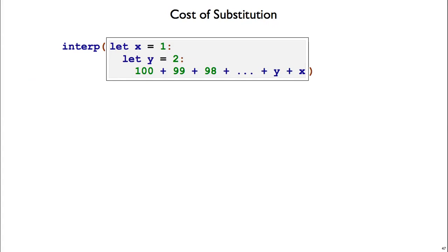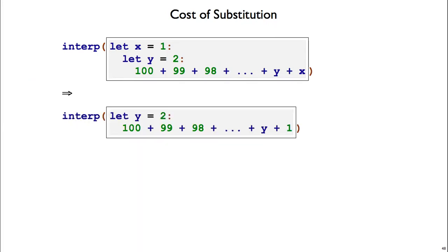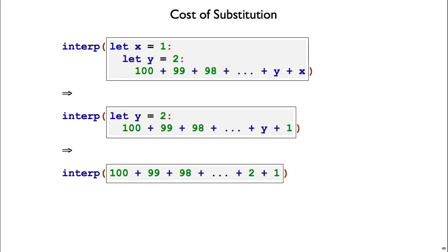Right now, we have a correct substitution function for let expressions, but it's also an expensive one. Here's an example to show why it's expensive. If we have let x equal 1, let y equals 2, and then some big expression down below, we end up doing a lot of work. We take x and walk over the whole expression to substitute in x for 1. Then we look at the y-binding and walk over the whole expression again, substituting 2 for y. So we're doing two traversals over a big expression, and if we have n variables, we're now taking n squared time. This is a high cost to substituting in.